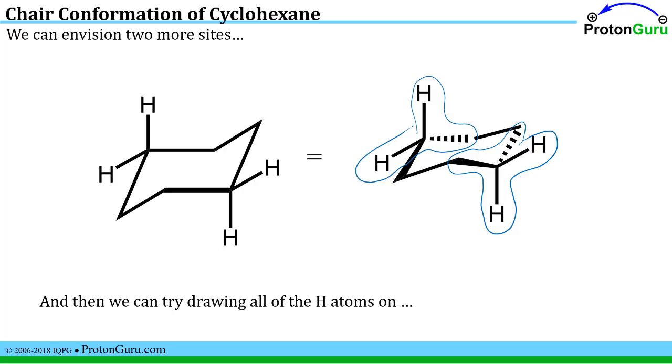As long as you understand that these bonds have to come forward because that's the part of the ring that you've tipped towards you and then this goes back to the back part of the ring and this goes back towards the back part of the ring, you kind of know to make the carbons tetrahedral where the hydrogens have to be.